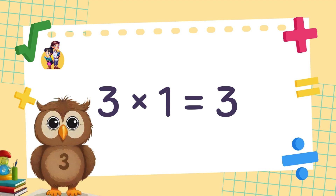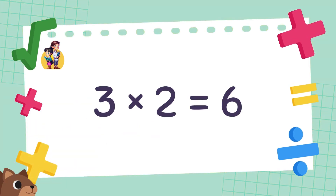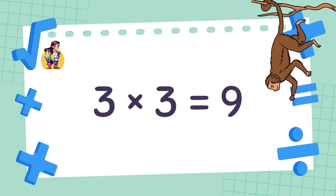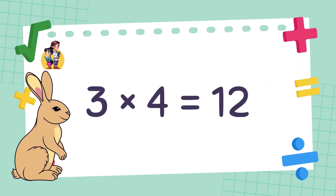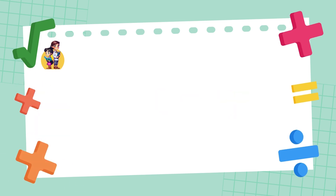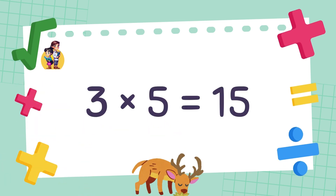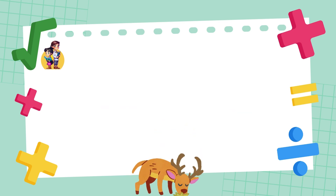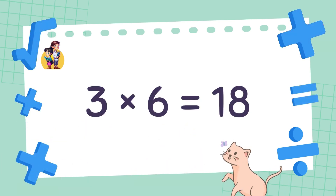3 times 1 is equal to 3. 3 times 2 is equal to 6. 3 times 3 is equal to 9. 3 times 4 is equal to 12. 3 times 5 is equal to 15. 3 times 6 is equal to 18.